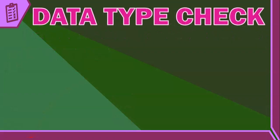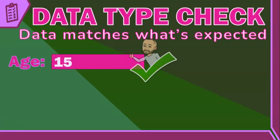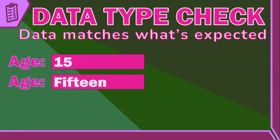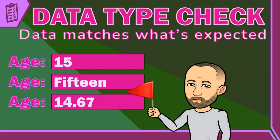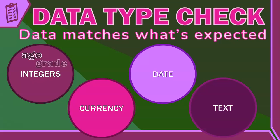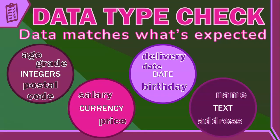Next is the data type check. This ensures that the data type of the entered value matches what's expected. For instance, if a system asks for your age it expects a whole number — not letters, and not a decimal like 14.67. If you type the word "15" instead of the number 15, or use a decimal, the data type check will flag it as an error. Age and grade should be integers; salaries and prices should be currency; birthdays and delivery dates should be a valid date format; names and addresses should be text or string.